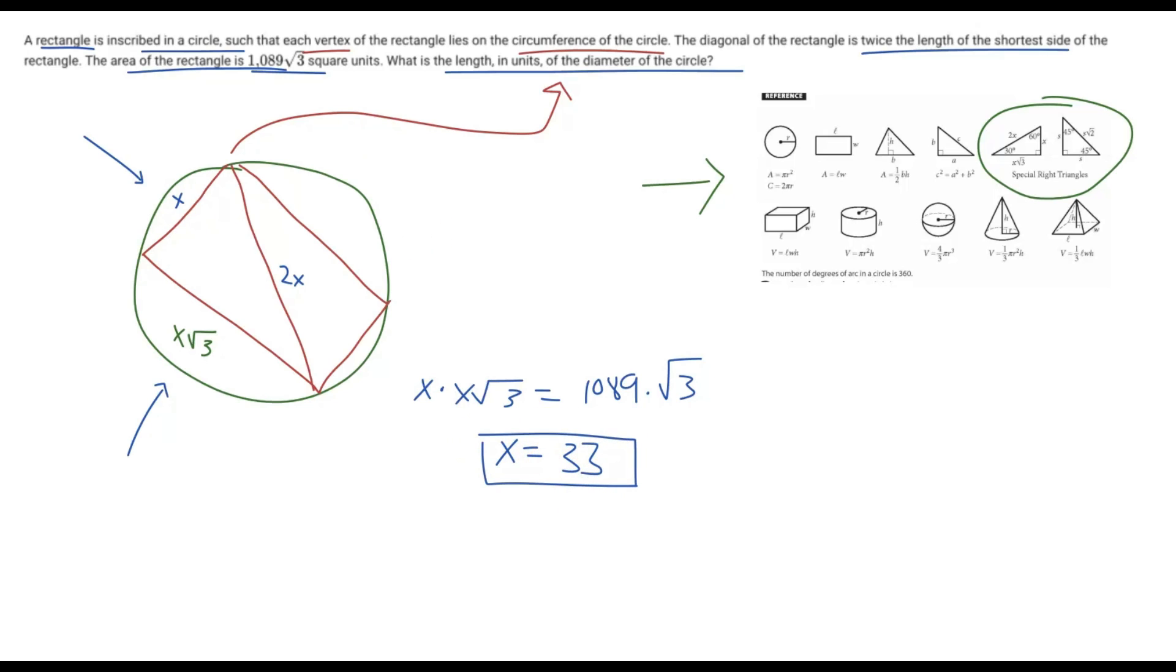And so now that we know what X is, all you have to do is plug it in here. So X is 33, so we know one of the side lengths is 33, but that diameter is that diagonal of the rectangle. And the diagonal of the rectangle is 2X, and so 2 times 33 gives us 66 as our final answer.